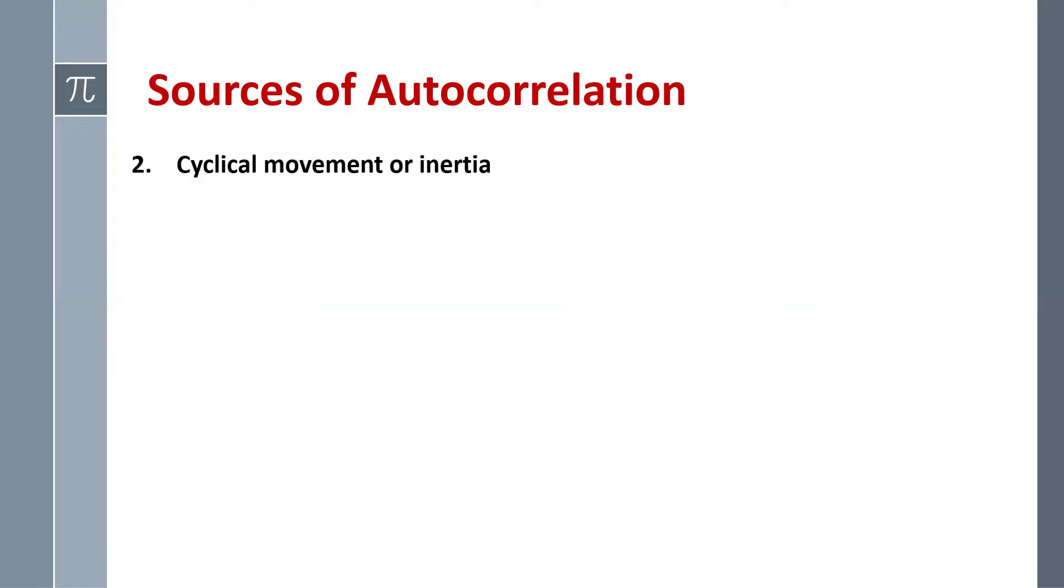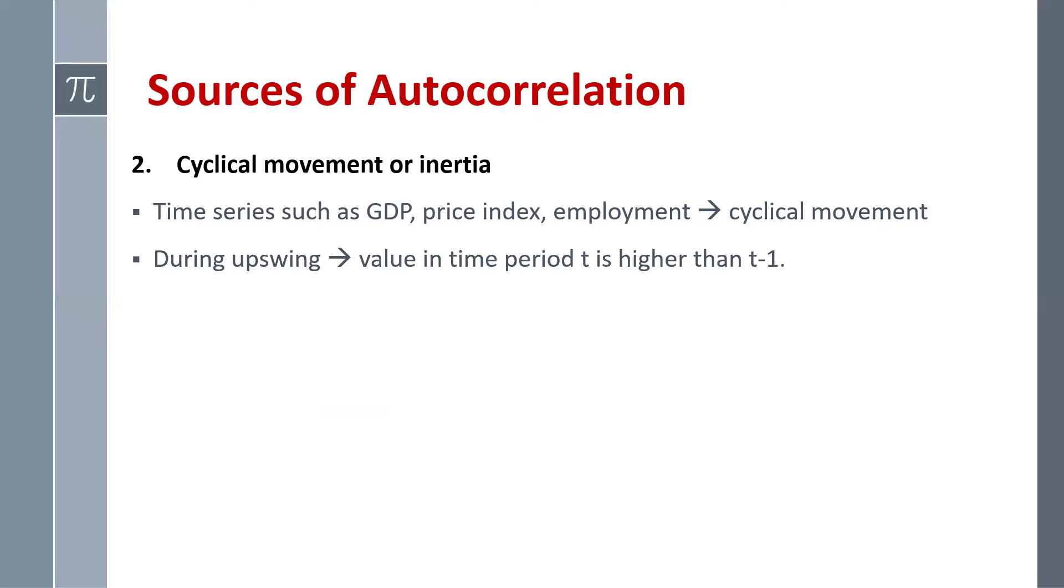Second is cyclical movement. Now various time series such as GDP, price index, employment, they follow cyclical movement. So during upswing, values in time period t is obviously higher than t minus one, and during downswing, value in time period t is lower than t minus one.